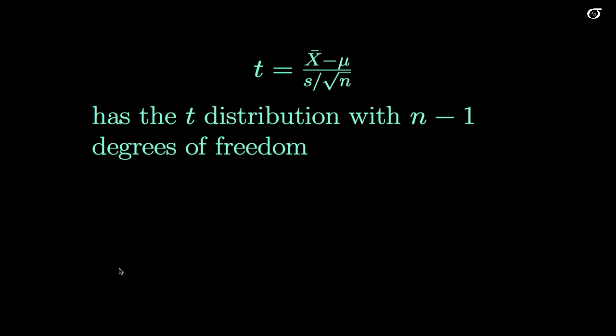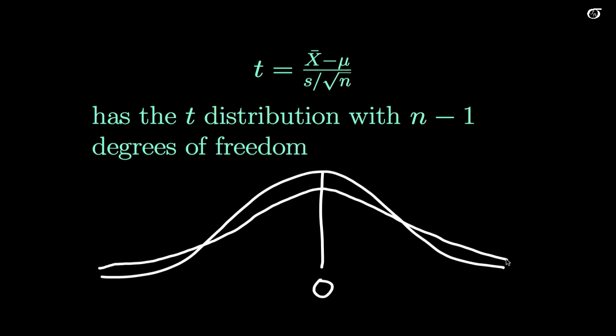But our standard normal distribution looks something like this, centered at zero, if you recall. Our t distribution is going to look a lot like that, except we're going to have greater area in the tails because of this extra variability and a lower peak. So if that's our standard normal distribution, then a t distribution looks something like that, with more area in the tails, at a lower peak. Still centered about zero, still symmetric about zero. Let's look at that in a bit more detail.